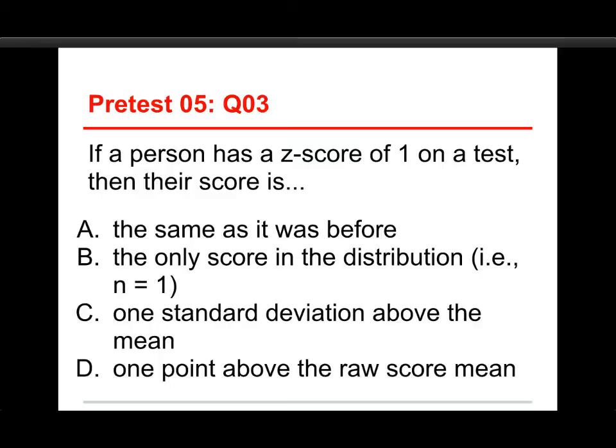Okay. Number three, if a person has a z-score of 1 on a test, then their score is: A. the same as it was before, B. the only score in the distribution, that is, it's a sample size or an n of 1, C. one standard deviation above the mean, or D. one point above the raw score mean. Well, the answer is one standard deviation above the mean.